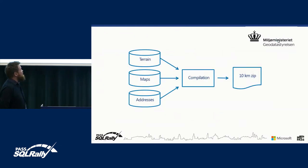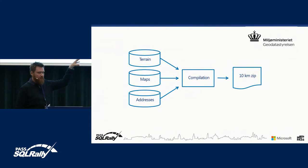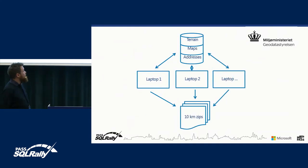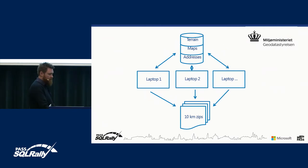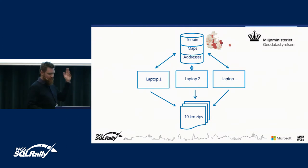We designed a database where we put everything in and compiled the data. This algorithm would spit out one 10-kilometre zip file — that would take the laptop two hours to do. But then we scaled up by just adding laptops, so we could run in parallel. To keep track of it, we added a spatial layer to our database — essentially a map. And using a map to keep track of processing was easy to do.